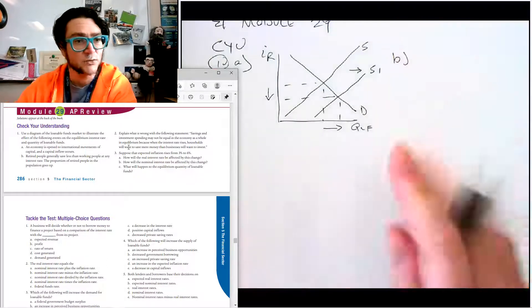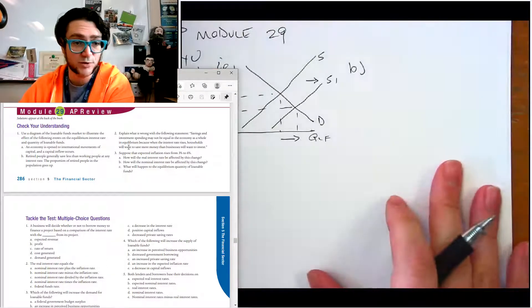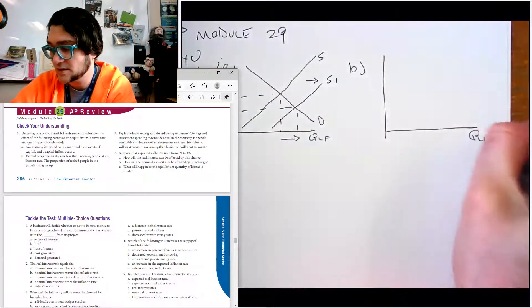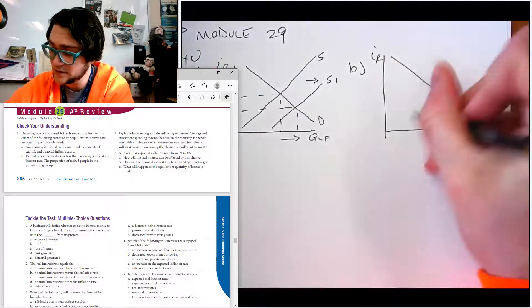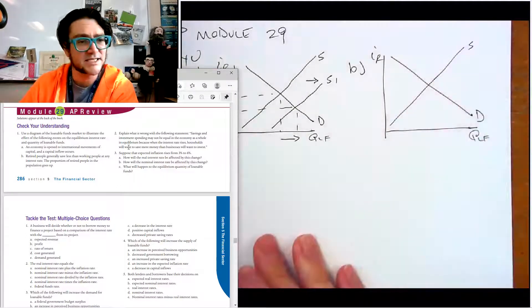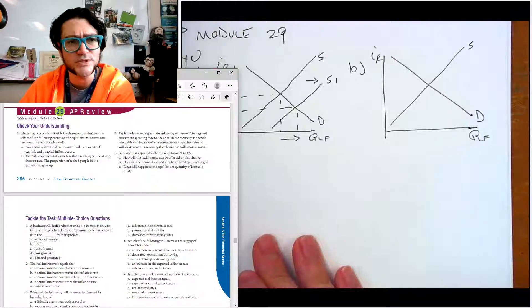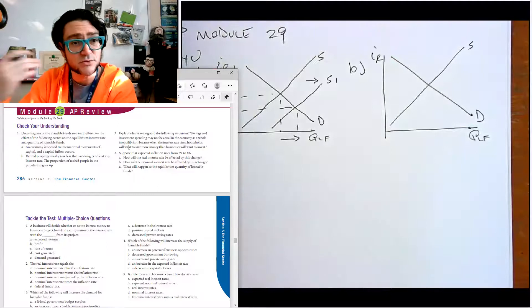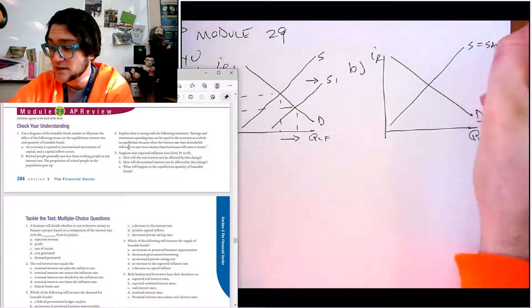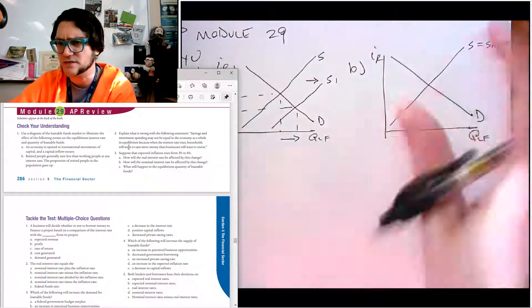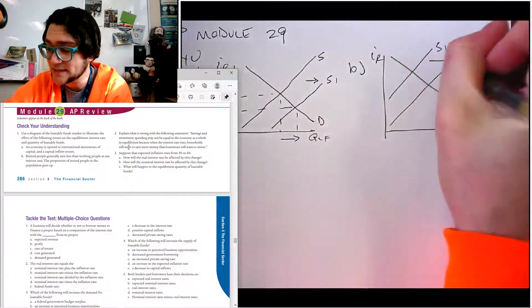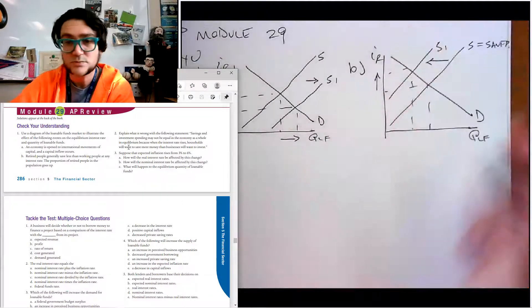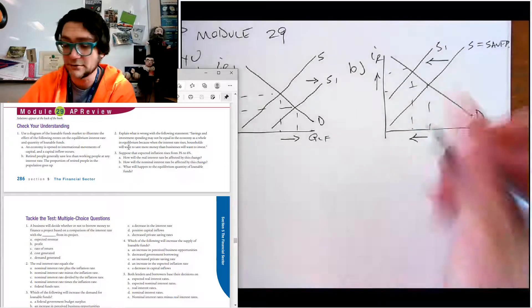Part B says retired people generally save less than working people at any interest rate. So we're going to do this again, QLF, demand and supply. And it says the proportion of retired people in the population goes up. So if they save less, then there's less savings. And we know that savings is what the supply comes from. So there's less supply, a shift to the left, which means interest rates go up and the quantity goes down.